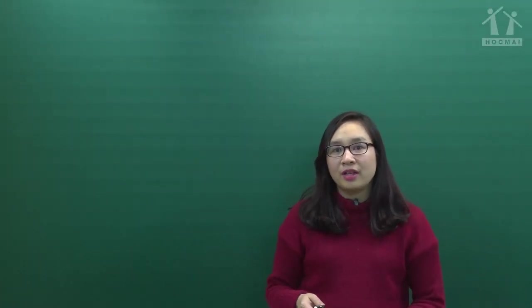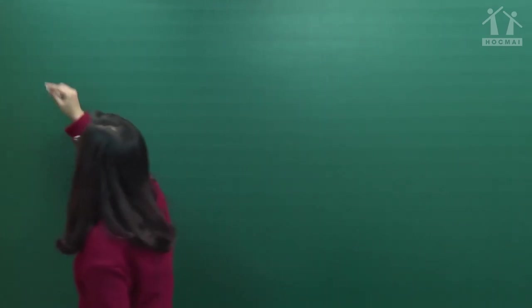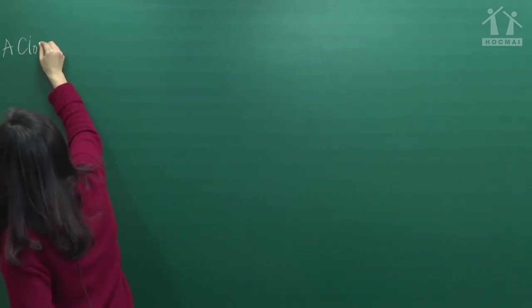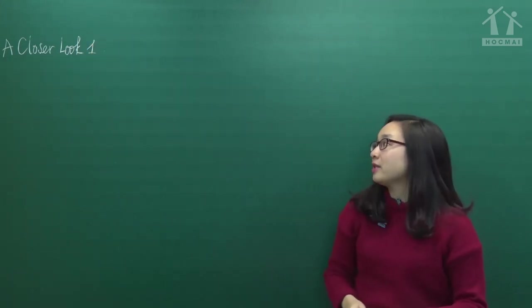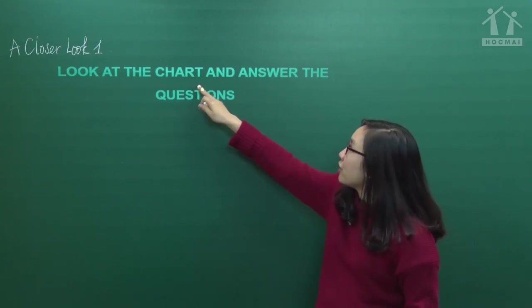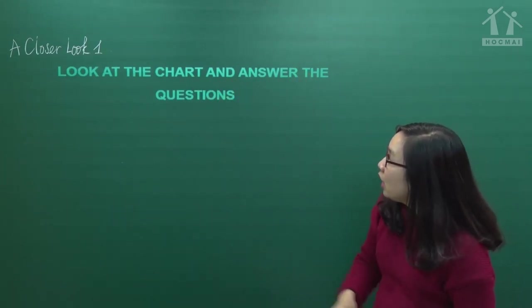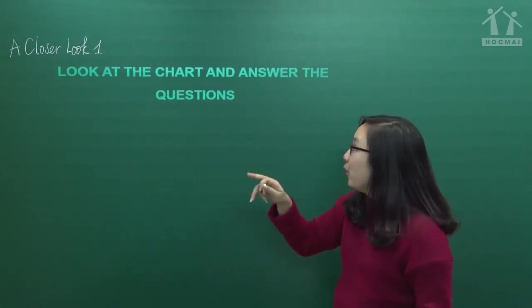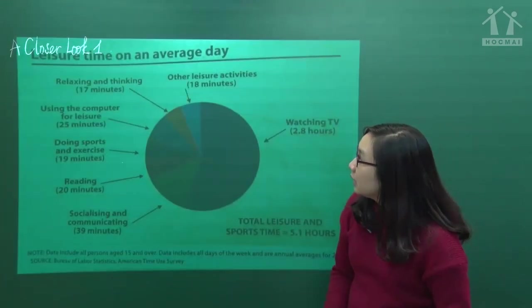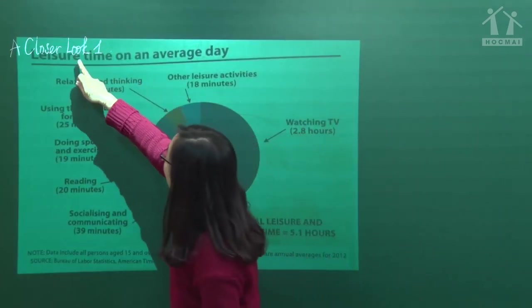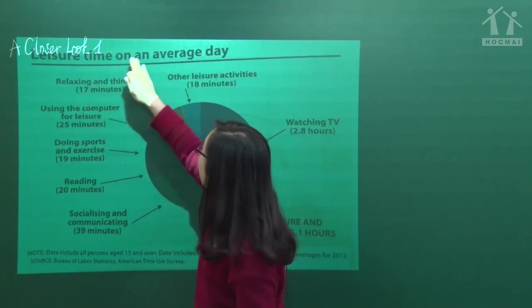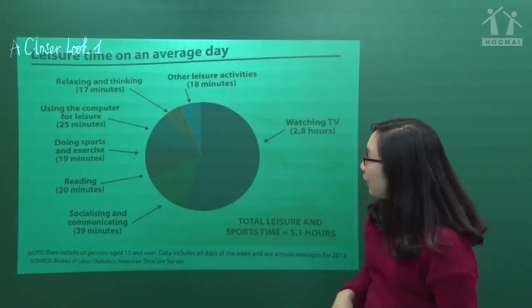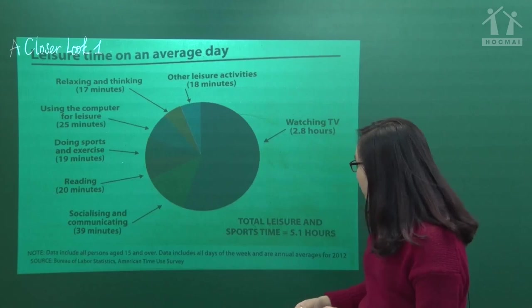Okay, so now we go to the second part in our lesson today - 'A Closer Look One.' Exercise number one: you have to look at the chart and answer the questions. Look at the chart - đó là chúng ta hãy nhìn vào cái biểu đồ và trả lời các câu hỏi sau. You see the chart here - we have the leisure time on an average day. Thời gian thư giãn trung bình của một ngày.